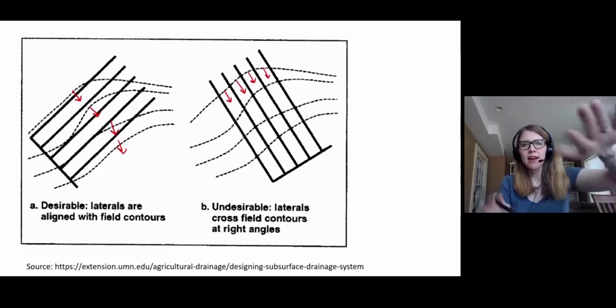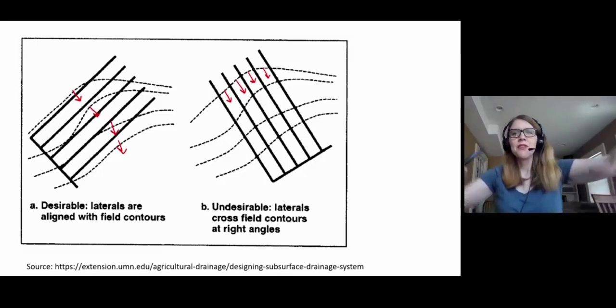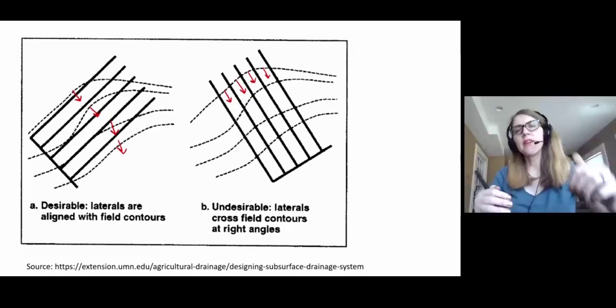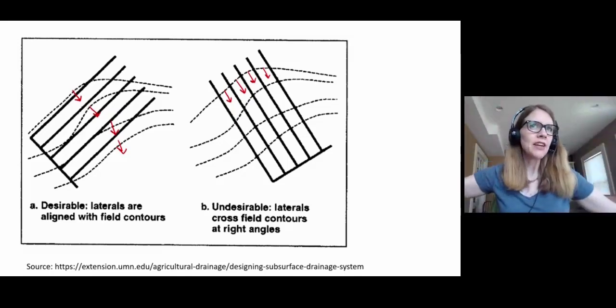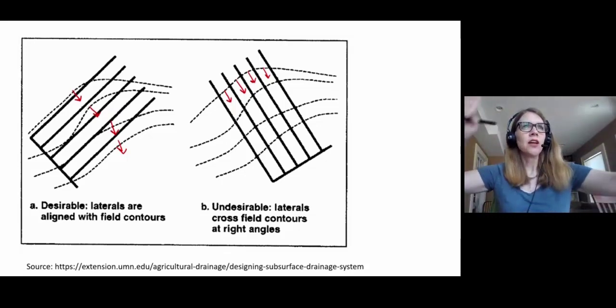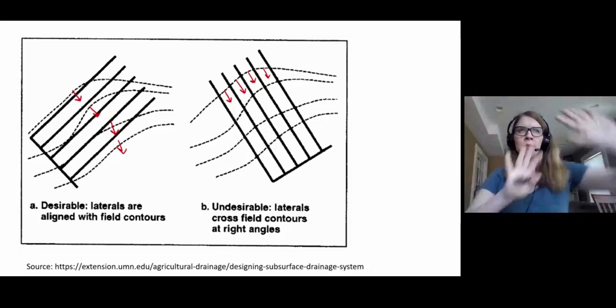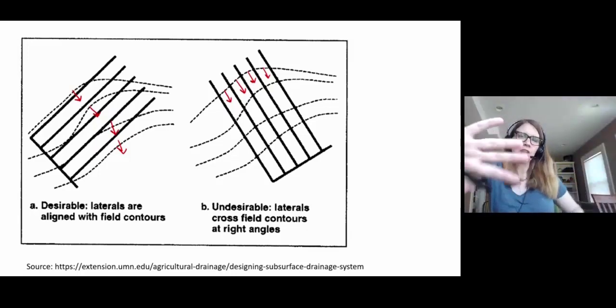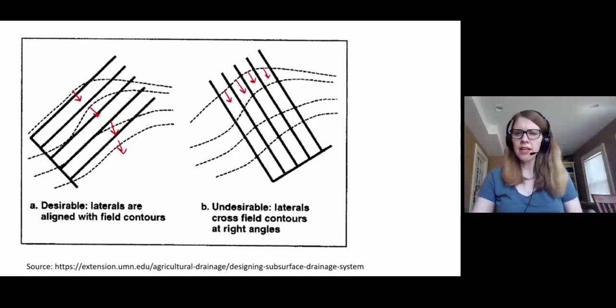So it's desirable if you can place the laterals parallel to the field contours as much as possible. Now in any given field you're going to have slopes in different directions, and so we also often have subsections of the drainage system. We might not be tiling the entire field with the same gridiron layout but rather we might have subsections and then we're linking them all together.